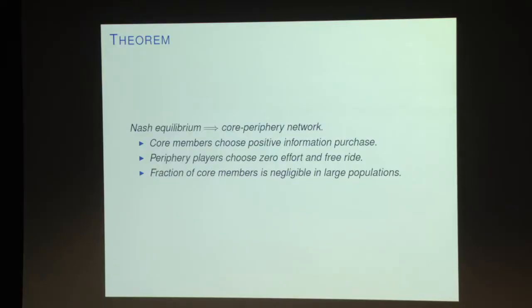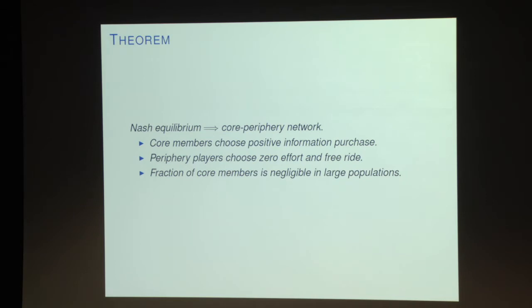In a paper with Andrea Gagliotti, we proved this theorem. It says something quite sharp and precise: any Nash equilibrium of the game I described will have the law of the few property. In other words, the network will have a core-periphery structure. The core is people who are active and buying information. The periphery is constituted of people who buy no information at all — they simply link with the core. And the core is going to be a very small set of people, becoming negligible as the population grows.